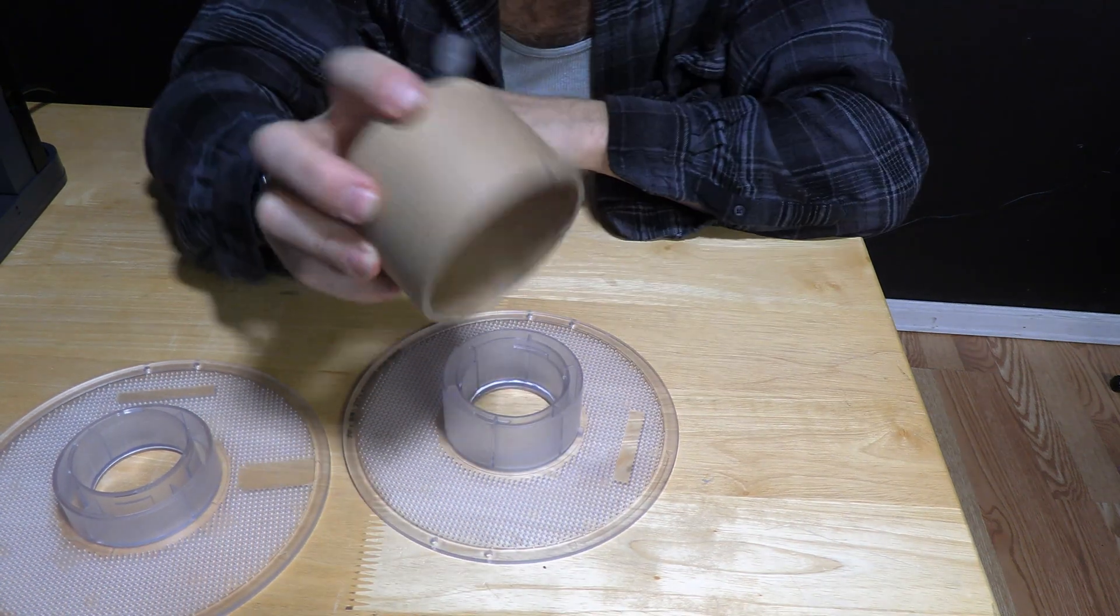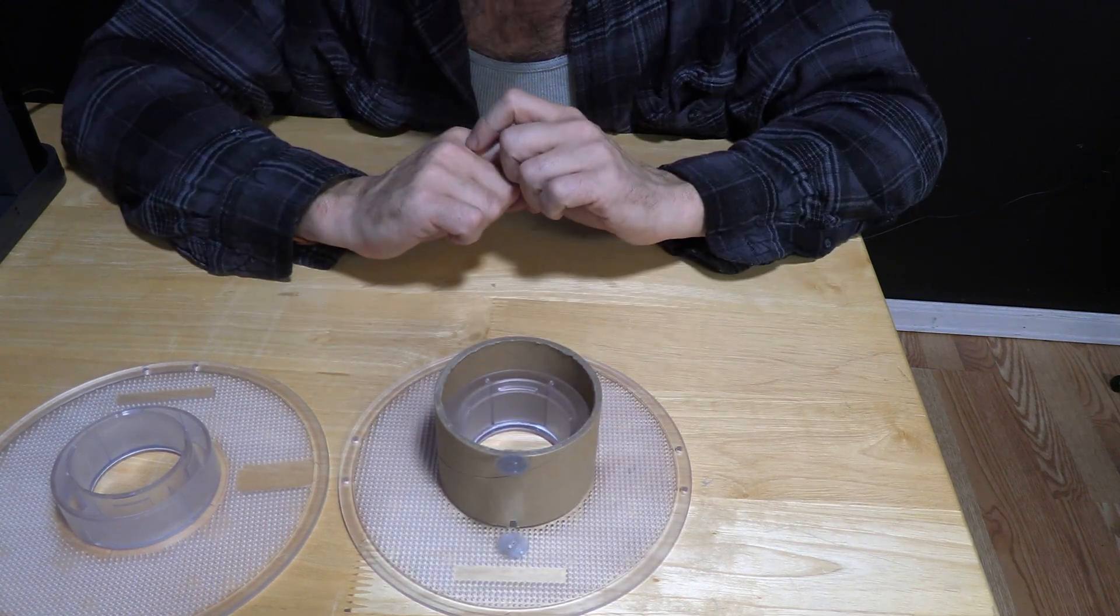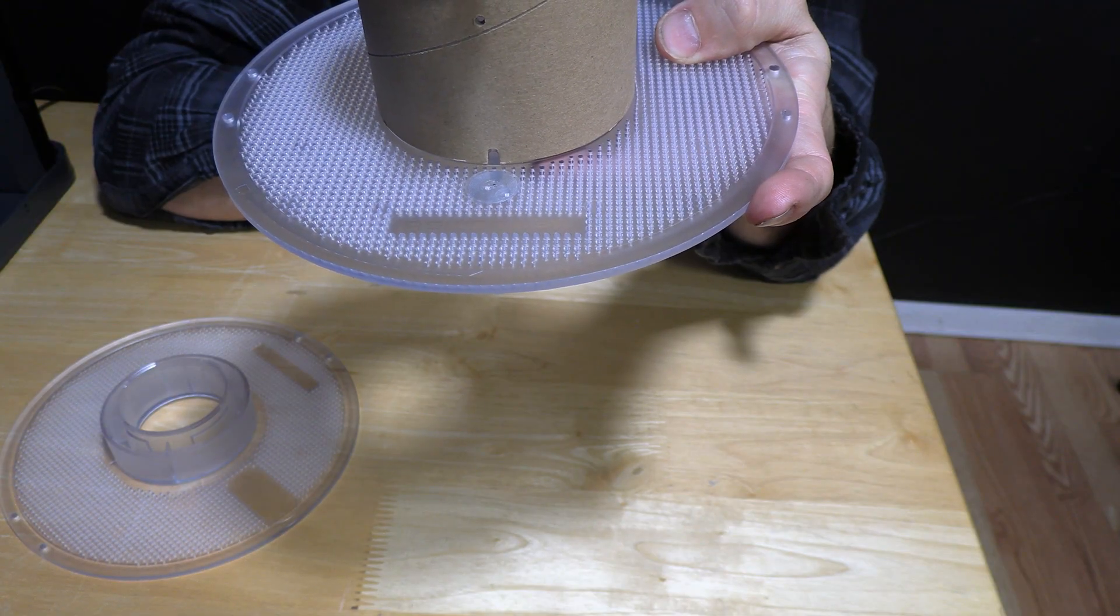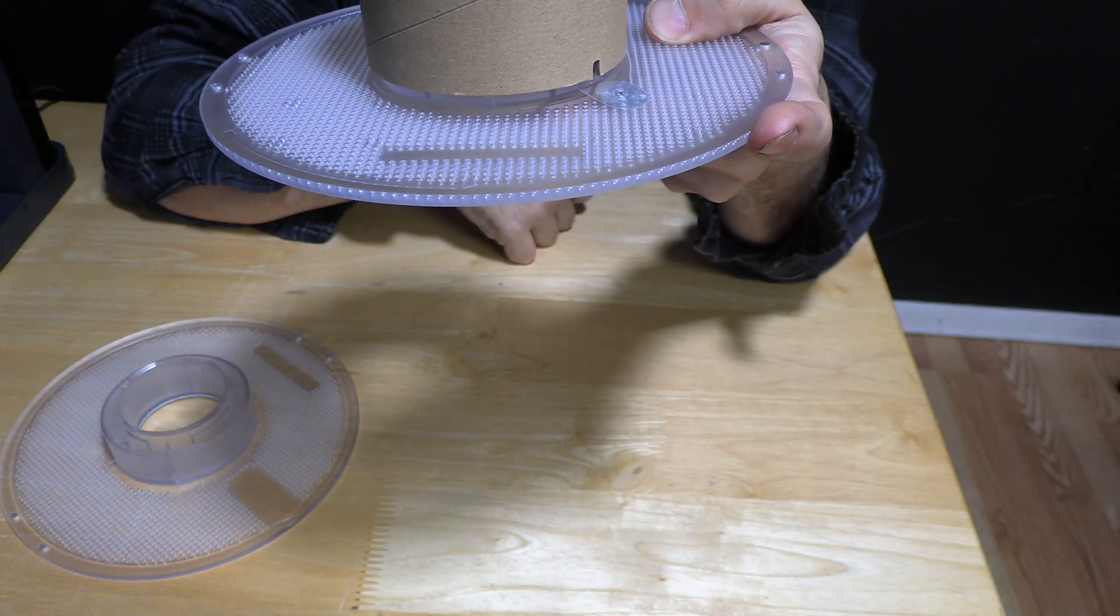This notch must line up with the notch on the reusable spool or else the core will not sit low enough. If you do not line up the notch the spool will sit on top of the notch creating a small gap.